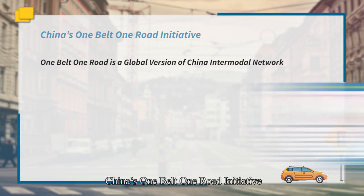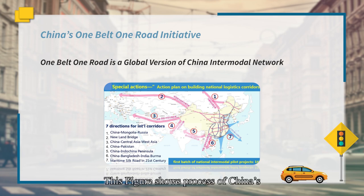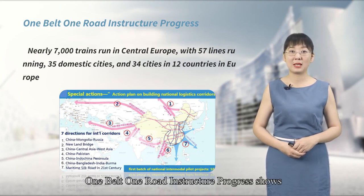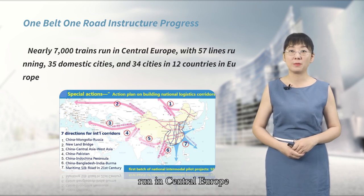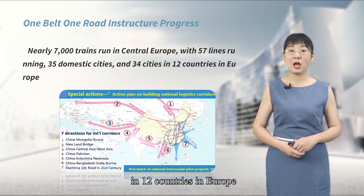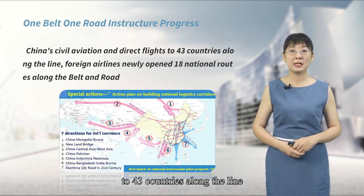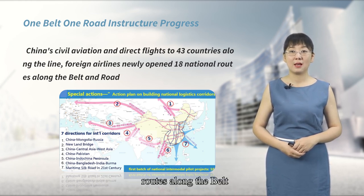Recently, China's One Belt One Road initiative has been frequently mentioned. One Belt One Road is a global version of China's intermodal network. The figure shows the scope of China's One Belt One Road initiative. One Belt One Road is developing rapidly. In terms of railway transport, nearly 7,000 trains run to Central Europe, with 57 lines running to 75 domestic cities and 34 cities in 12 countries in Europe. China's civil aviation has direct flights to 43 countries along the route, and foreign airline countries have newly opened 18 national roads along the Belt.